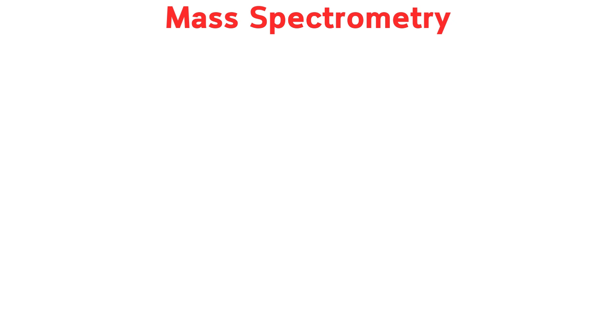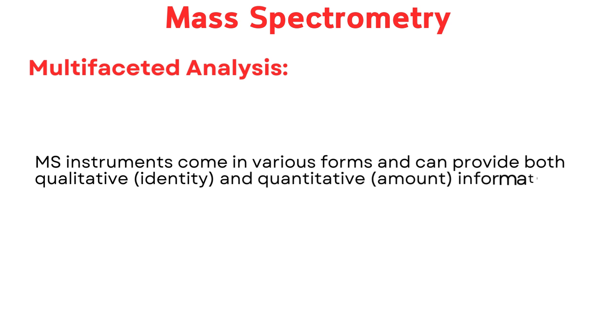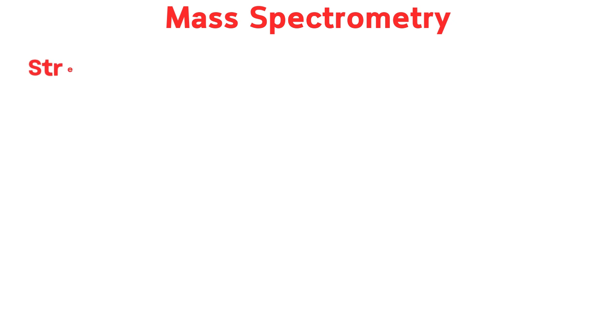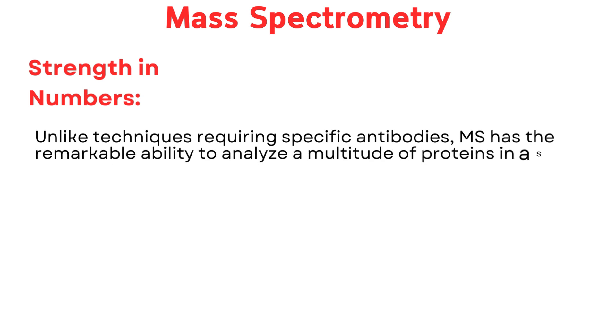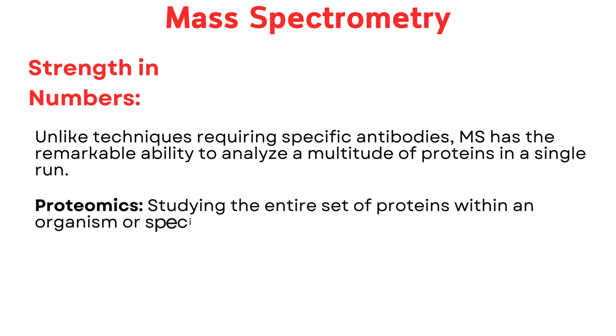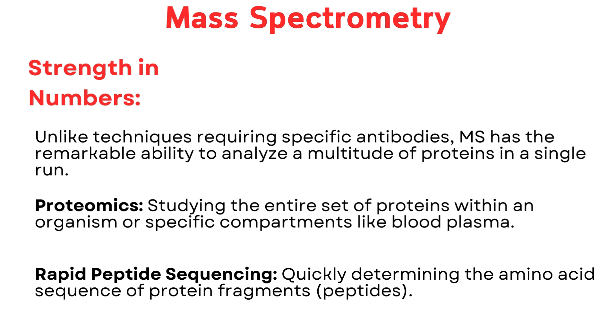Mass spectrometry (MS): unveiling the protein fingerprint. MS is a powerful analytical technique that goes beyond simply separating proteins — it allows scientists to identify and quantify them. MS instruments can provide both qualitative (identity) and quantitative (amount) information. Unlike techniques requiring specific antibodies, MS can analyze a multitude of proteins in a single run, making it ideal for proteomics — studying the entire set of proteins within an organism or blood plasma — and for rapid peptide sequencing.